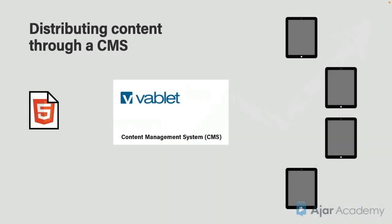In an earlier movie, I mentioned that a sales enablement platform is, at its core, a content management system. The main purpose of a content management system is to ensure that everyone has the latest version of the content assigned to them. Here's how a CMS works.